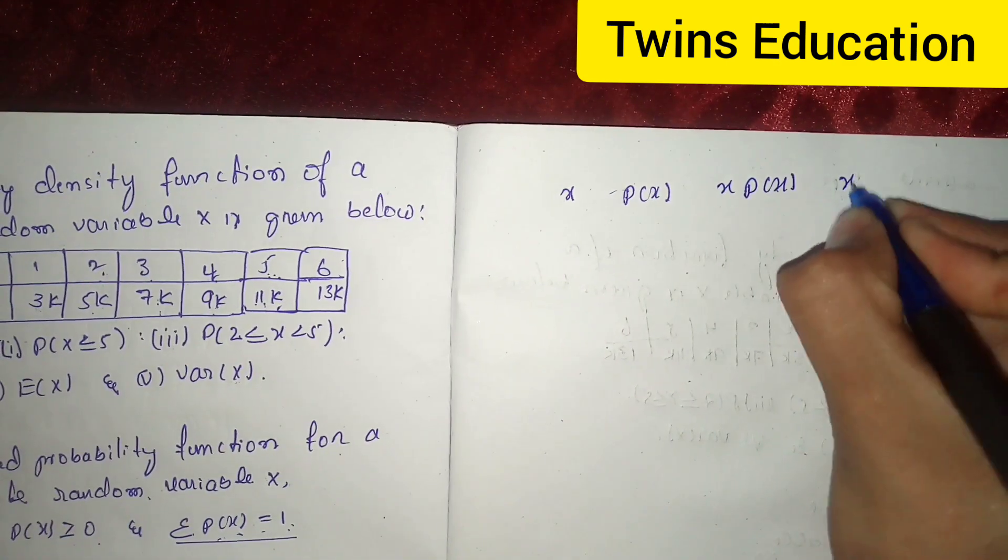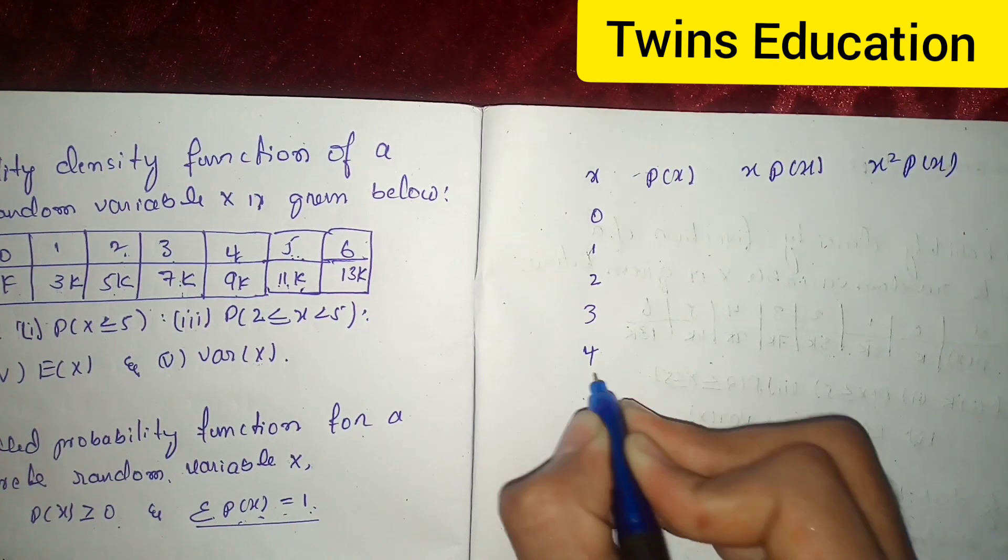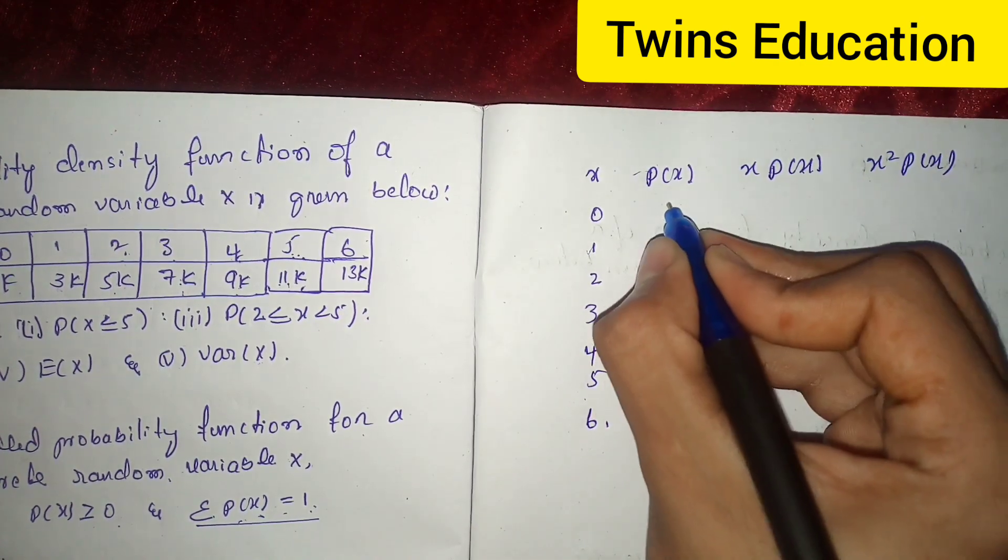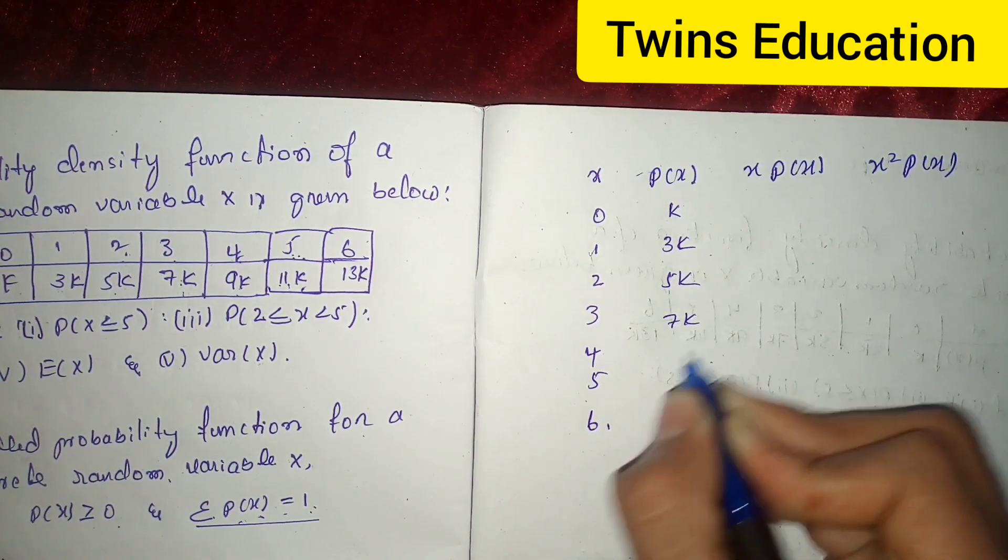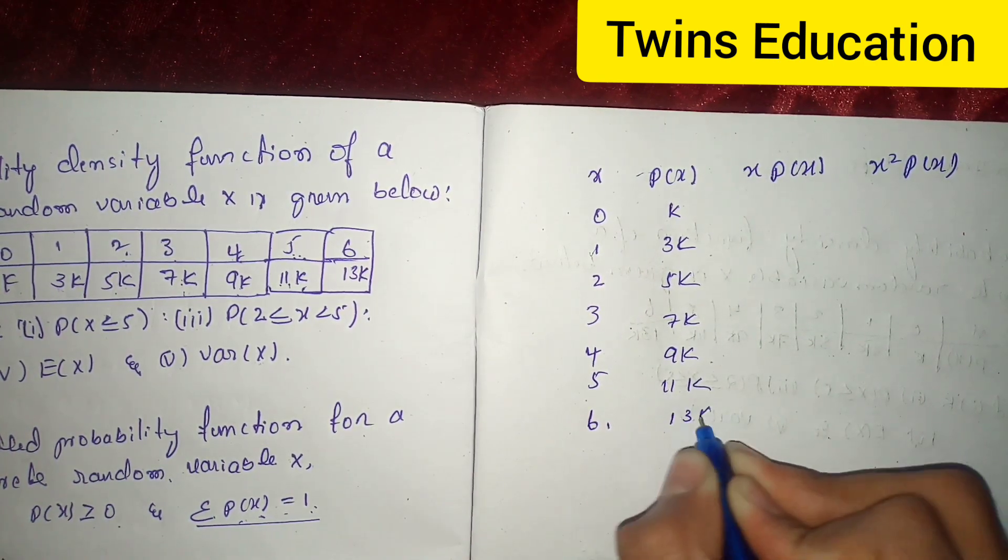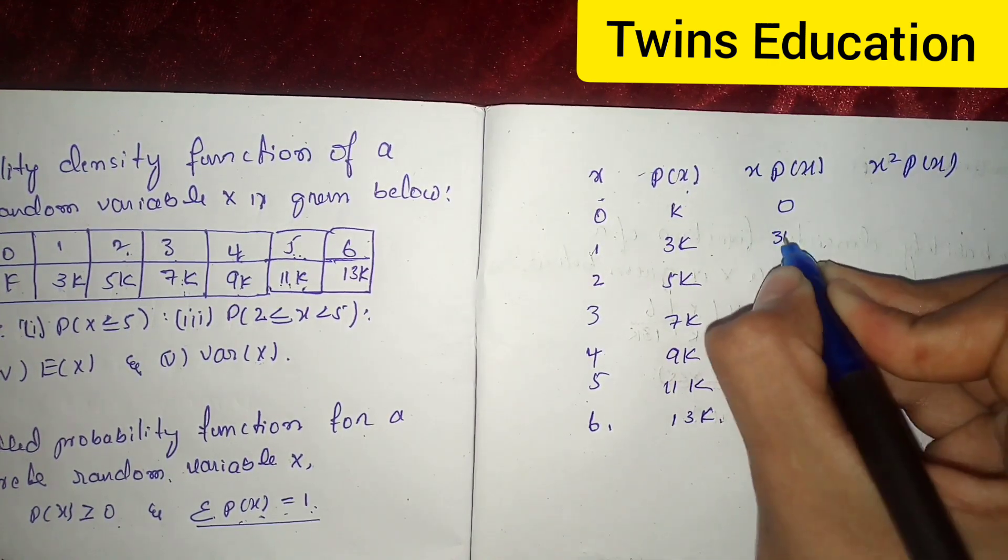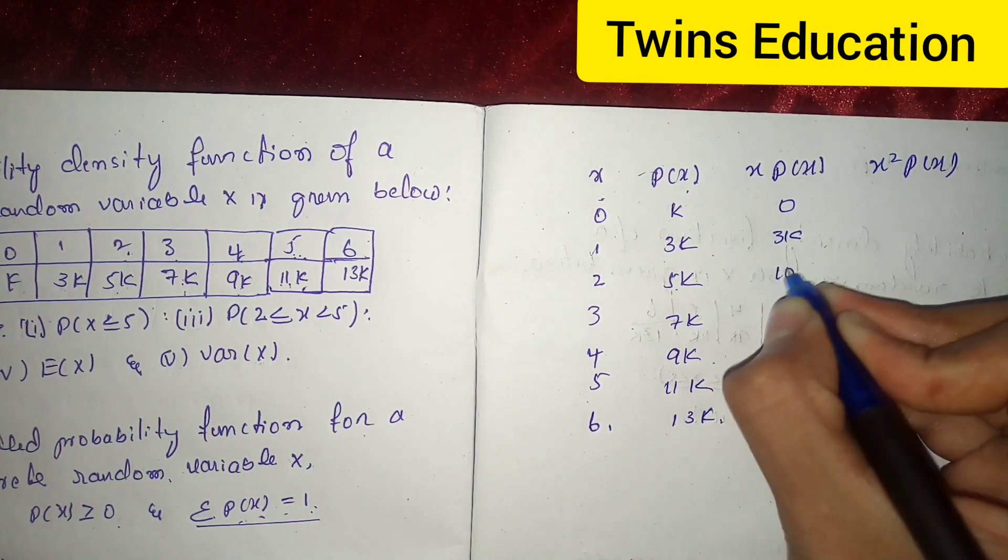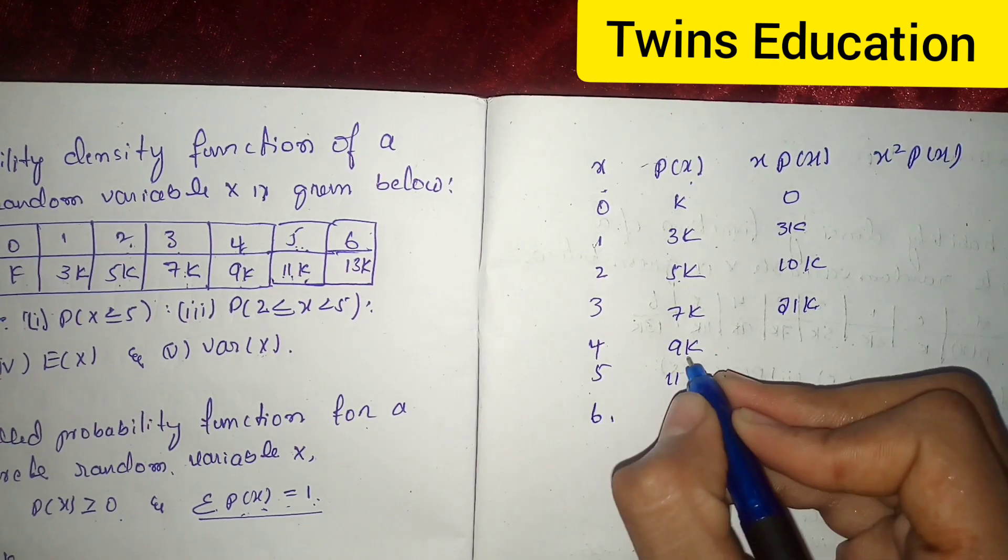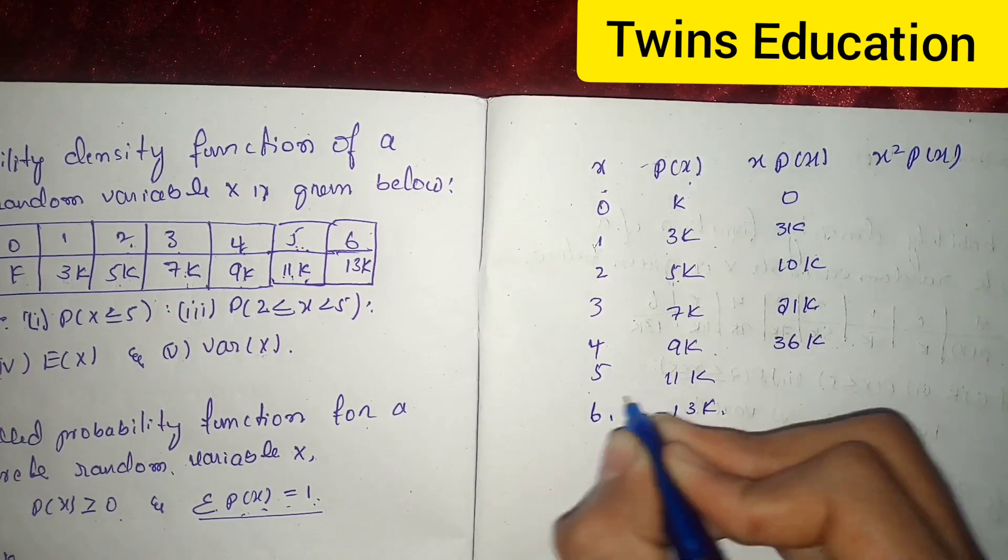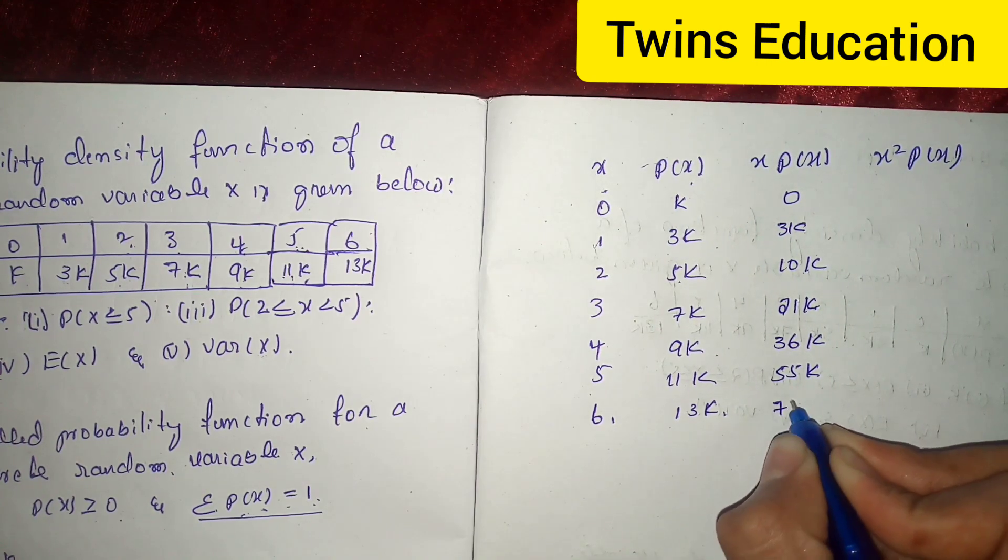Here, x, p of x, x p of x, and x square p of x. What is x? 0, 1, 2, 3, 4, 5, 6. What is p of x? k, 3k, 5k, 7k, 9k, 11k, and 13k. Multiply x into p of x: 0, 3k, 2 into 5k is 10k, 3 into 7k is 21k, 4 into 9k is 36k, 5 into 11k is 55k, 6 into 13k is 78k.